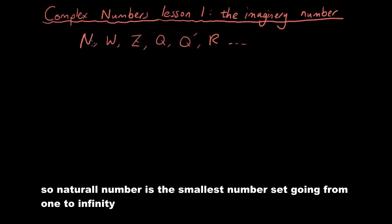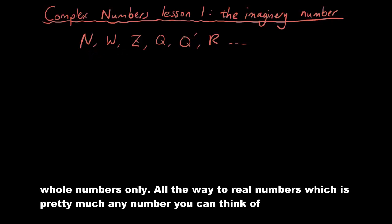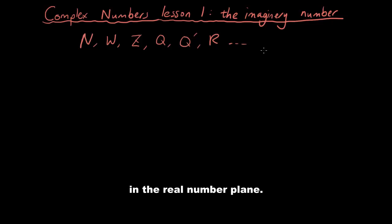You probably realize the number sets that we have here are arranged from smallest to largest. So natural number is the smallest number set going from 1 to infinity, whole numbers only, all the way to real numbers, which is pretty much any number you can think of in the real number plane.